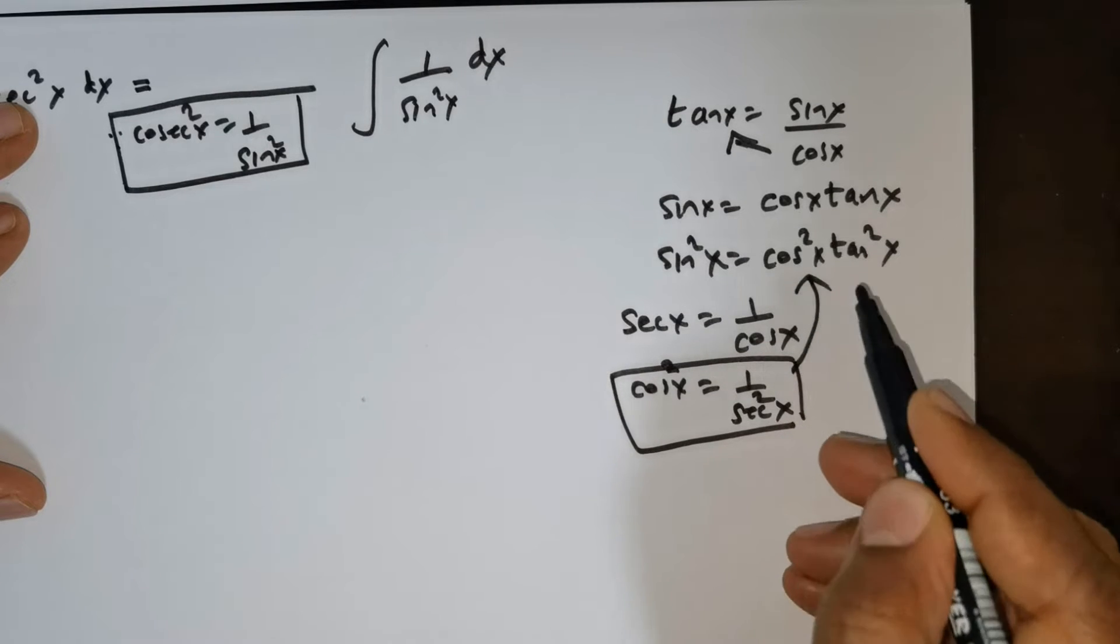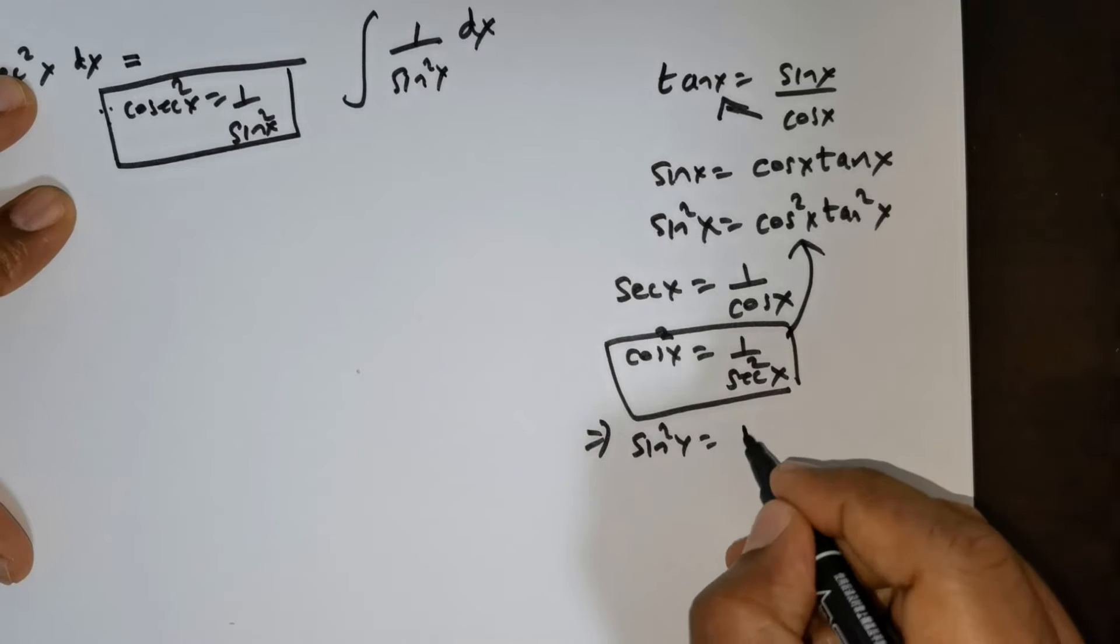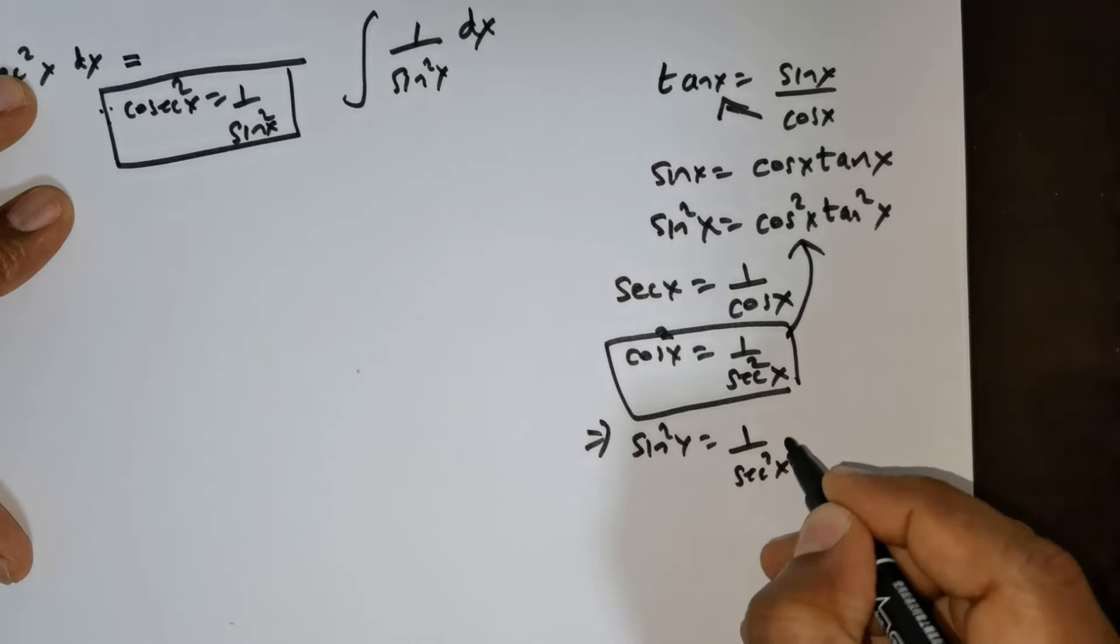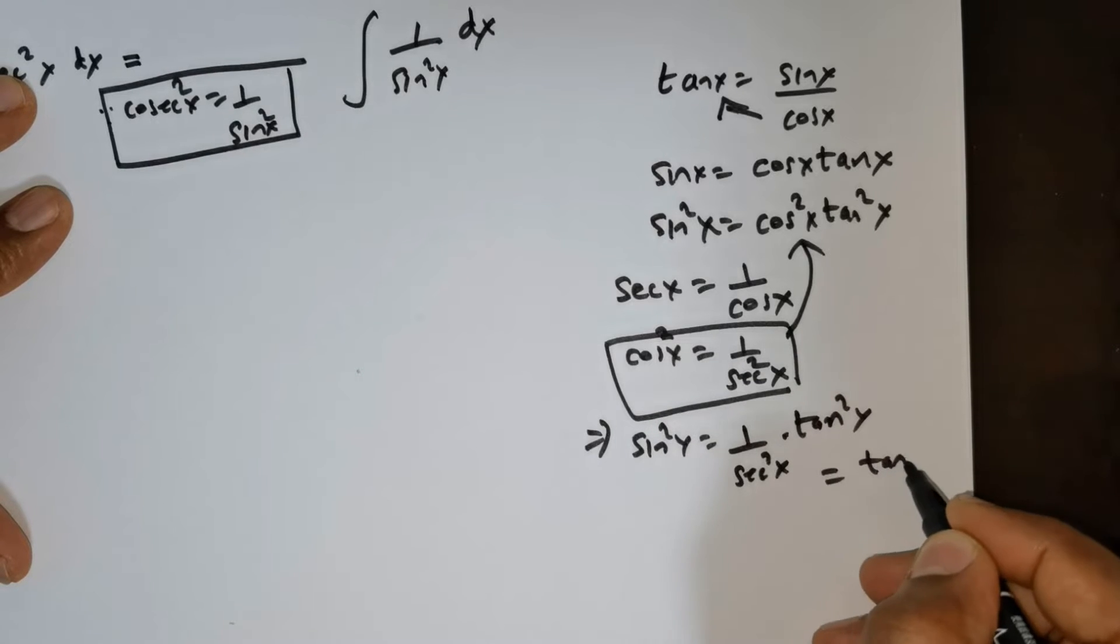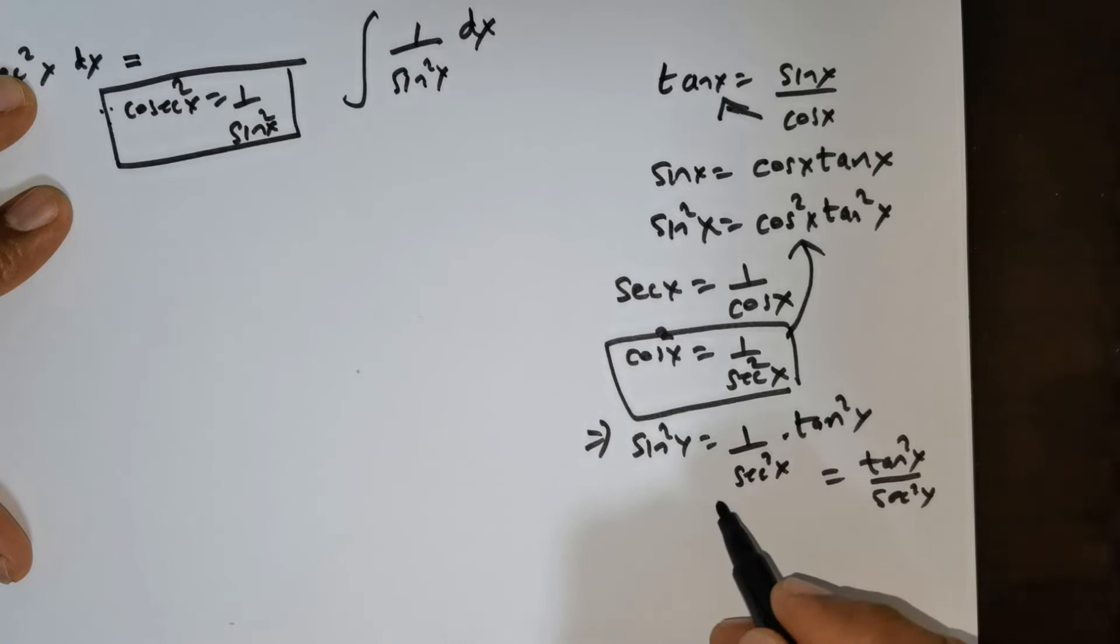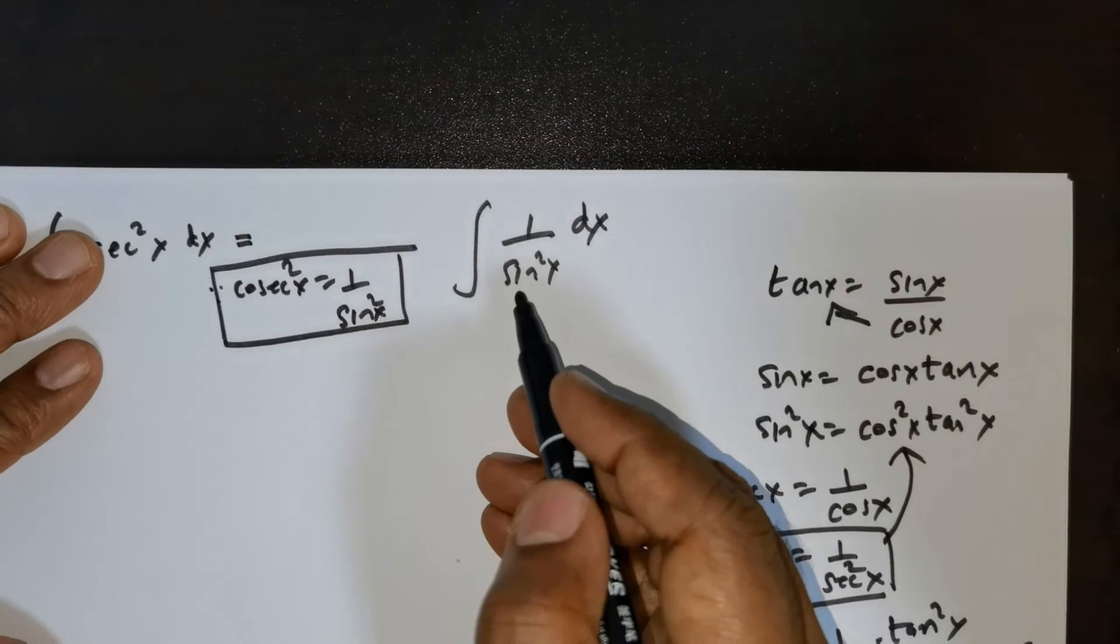So this means sine squared x is now written as 1 over secant squared x times tan squared x, which is rewritten as tan squared x over secant squared x. So in place of sine squared x I'm going to substitute this, but we have sine squared x in the denominator, not the numerator.